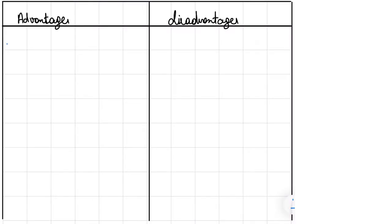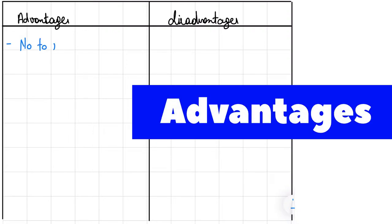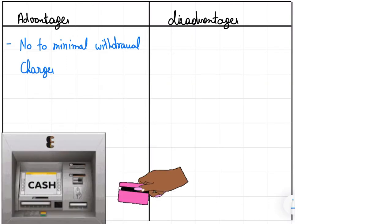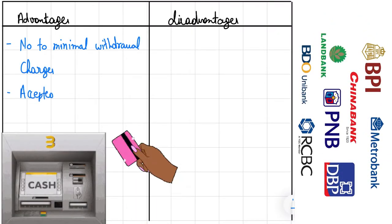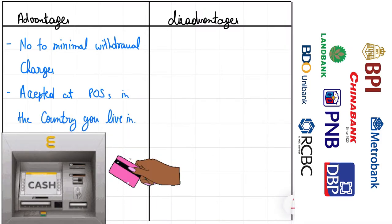Another option is to open a bank account in the country you are living in. This can be a good choice if you are going to stay in that country for a period of time. The advantage is that you pay minimal to zero charges for ATM withdrawals and the card is mostly accepted at all point-of-sale terminals in the country you are living in.